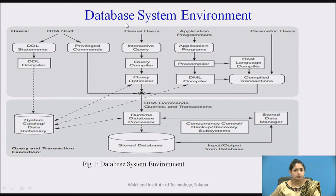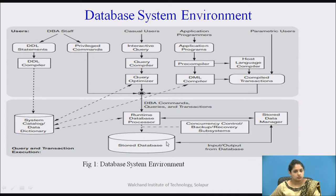This is a diagram of the database system environment. The topmost layer defines the different types of users: the DBMS staff, casual users, application programmers, and parametric users. The lowest part describes the storage of the database management system software and how the data is stored in it.